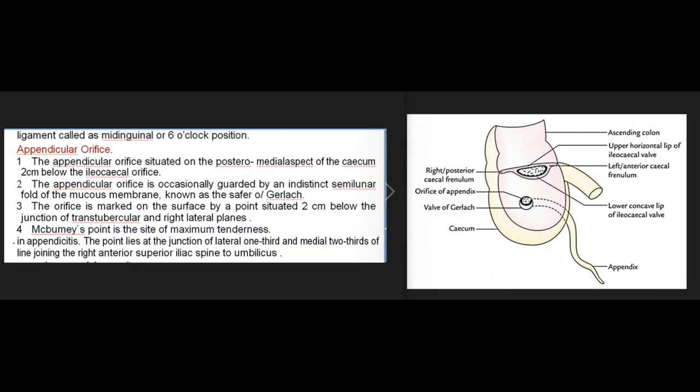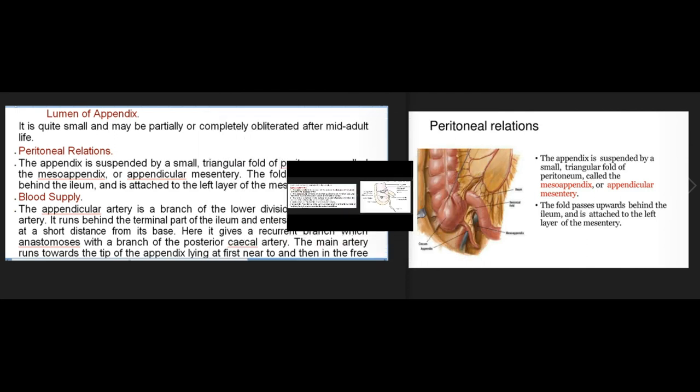The appendicular orifice is situated on the posteromedial aspect of the cecum, two centimeters below the ileocecal orifice. It is occasionally guarded by an indistinct semilunar fold known as the valve of Gerlach. The orifice is marked on the surface at a point two centimeters below the junction of the trans-tubercular and right lateral planes. McBurney's point is the site of maximum tenderness in appendicitis, lying at the junction of the lateral one-third and medial two-thirds of the line joining the right anterior superior iliac spine to the umbilicus.